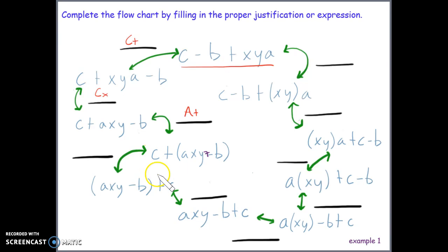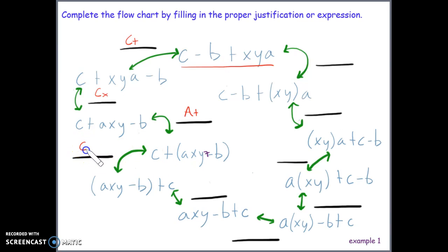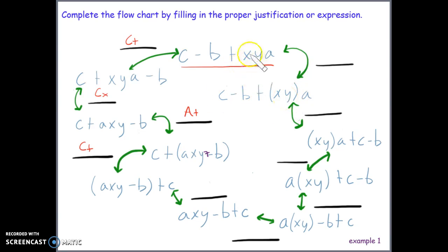Comparing the next two expressions, C + started the expression and now +C is at the end. We changed the order, and since C is being added (not multiplied to anything), this is the commutative property of addition. Going back to the original expression, comparing it to the one below connected by the upward arrow, the order did not change, but the groups did shift — new parentheses appeared.